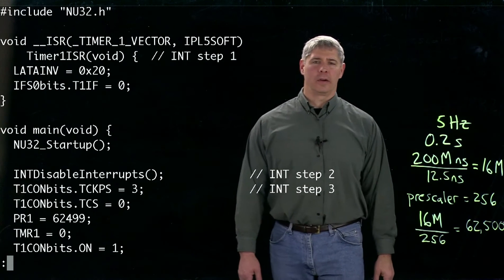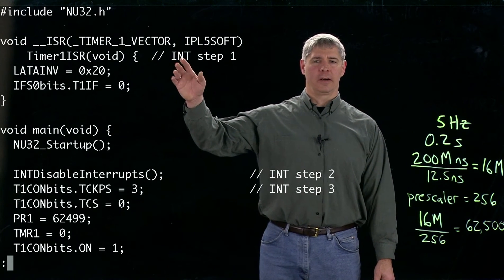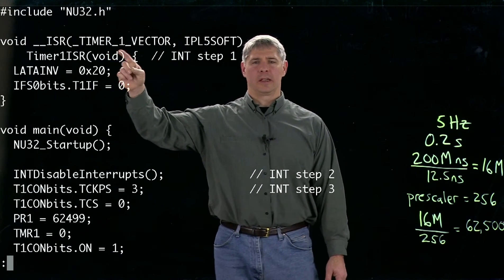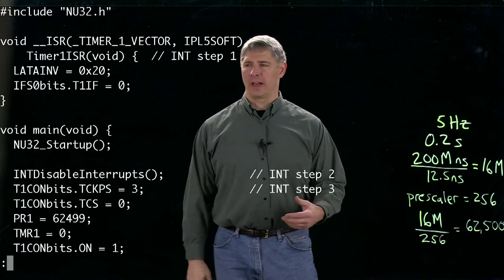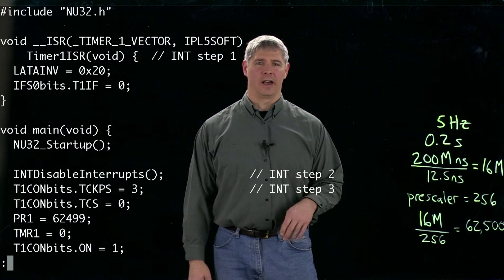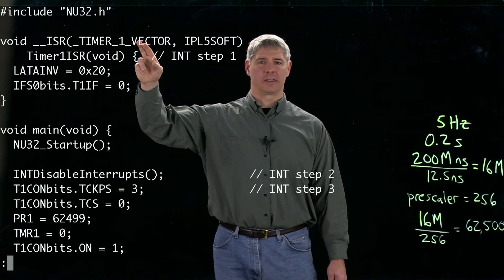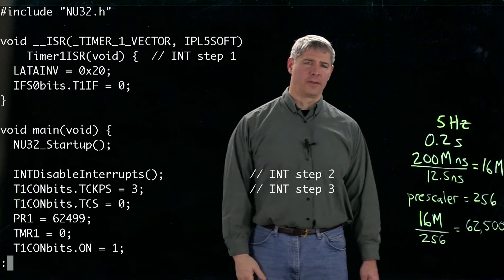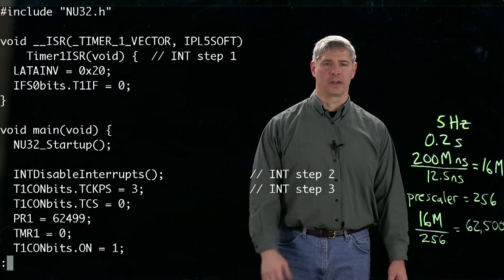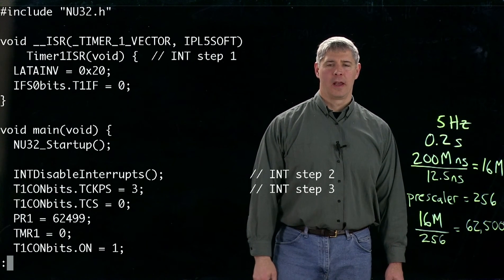Okay, so here's our interrupt service routine. Here we're using the timer one vector. If we look that up in the table in the interrupt section, we see that that's interrupt vector four, so we could just say four here instead of using this constant. And we're going to use priority level five and software context save and restore. Once